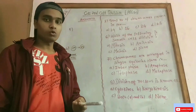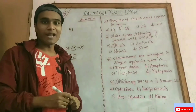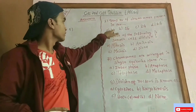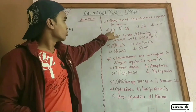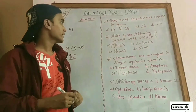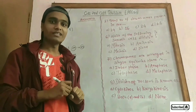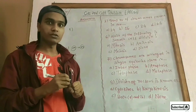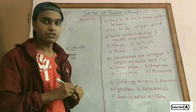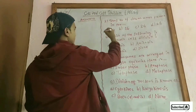The total number of chromosomes present in a pea plant is what? Options are 14, 16, 24, or 28. Since a pea plant contains 7 pairs of chromosomes, the total number is 14.